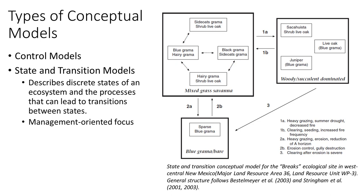Changes among plant communities within states are considered reversible through simple changes in management, like grazing, or by fluctuating climatic conditions. State and transition model diagrams show possible transitions between states and illustrate the factors that increase the probability that changes will occur. Transitions between states are reversible only through generally costly, intensive practices like shrub removal or soil modification. A good conceptual model will help you define what aspects of an ecological attribute may be important to measure for monitoring.